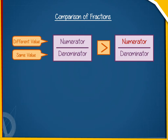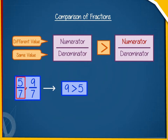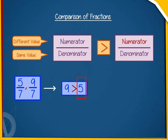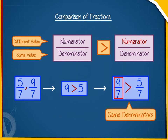If two fractions have the same denominator, then the fraction with the greater numerator is greater. For example, when we compare 5/7 and 9/7, we find that 9 is greater than 5. So, 9/7 is greater than 5/7.